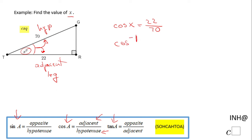And that function is going to give us the angle for which the cosine is 22 over 70, and that is...